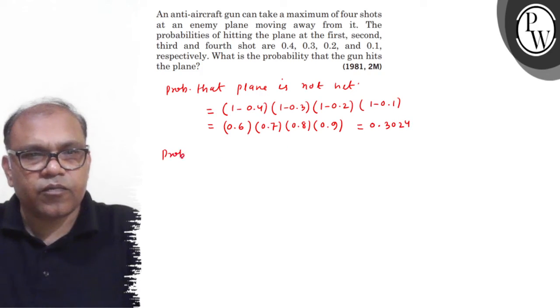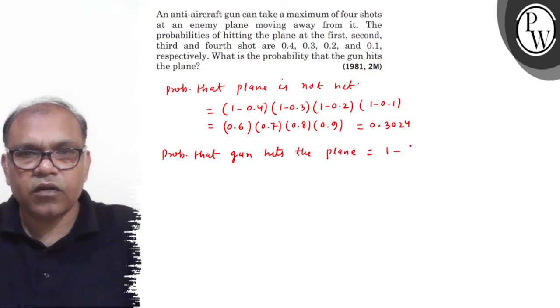Probability that the gun hits the plane will be 1 minus 0.3024.